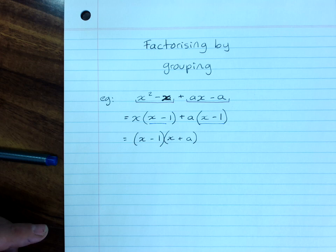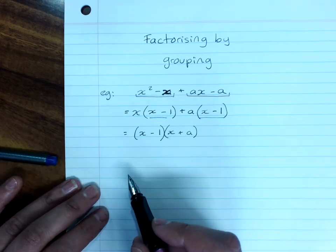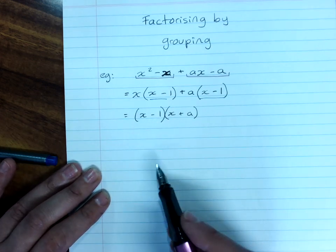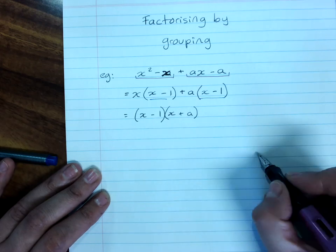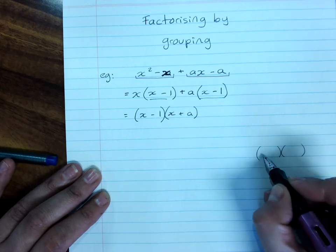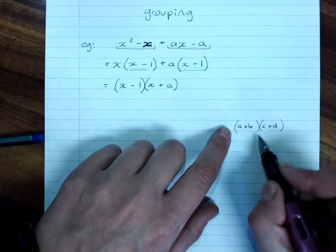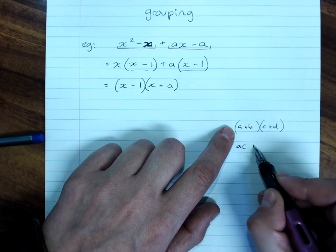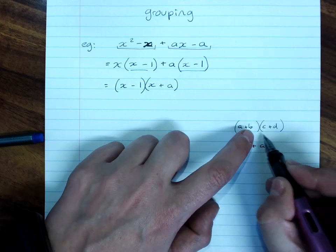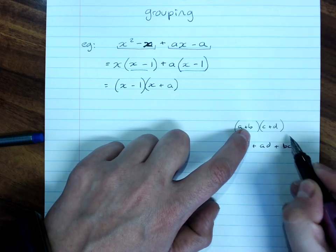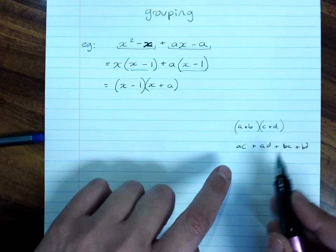Now where this comes from of course is that when you expand a binomial, a times b, sorry a times c, plus ad plus bc plus bd, you get four separate terms.